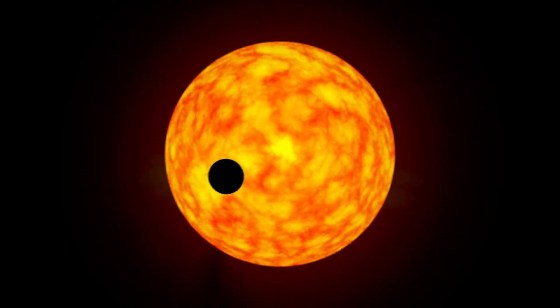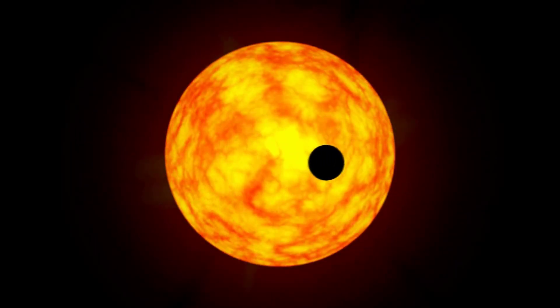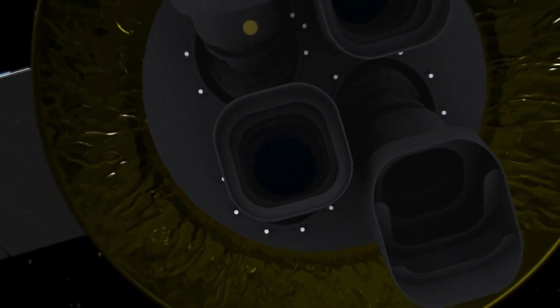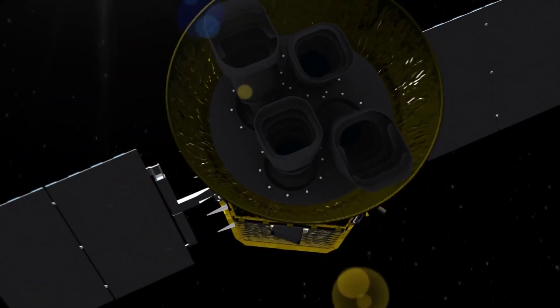TESS will be monitoring the light received from distant stars to detect planets that pass in front of those stars. If and when a planet passes in front of one of those stars that it's monitoring, TESS will be able to detect the small drop in visual brightness to measure the planet's mass, size, and density.